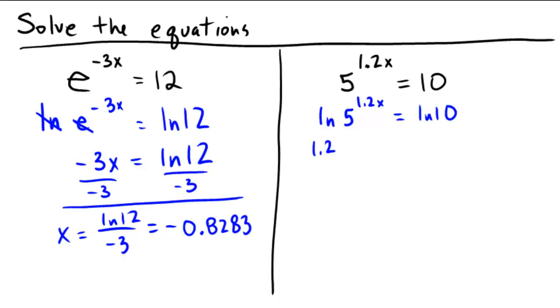Pull out the exponent. 1.2x ln 5 equals ln 10. And that simply means that x is going to be ln of 10 divided by 1.2 ln of 5. Yay!